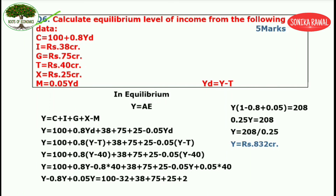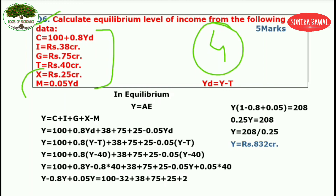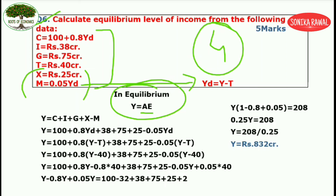Now question number 6 — the last question of this video. This is a four sector economy model. In a four sector model, exports and imports are also given. In equilibrium, Y is equal to AE. The question has already provided the formula for Yd as Y minus T. AE is written as C plus I plus G plus exports minus imports.